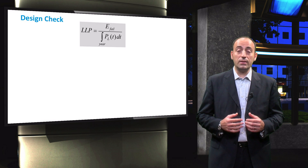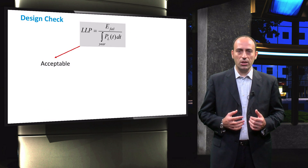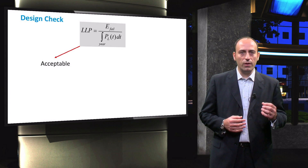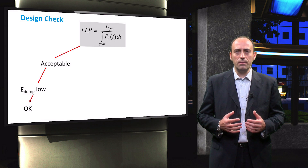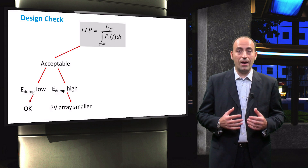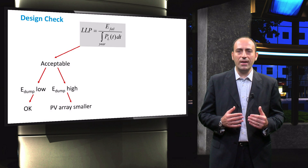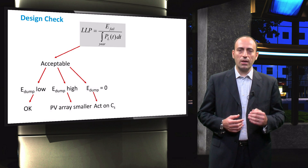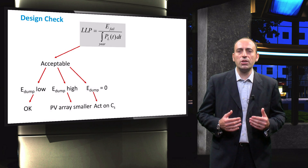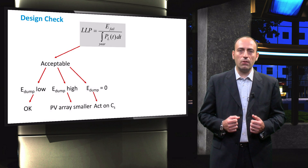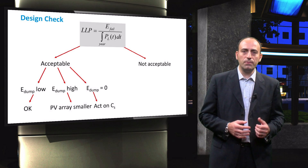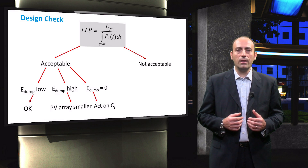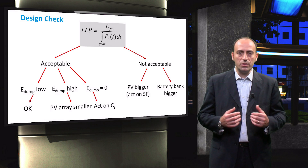If the loss of load probability is acceptable, and this depends on the application of your PV system, the calculated dumped energy by the PV system is assessed. If the E-dump value is low, the system is approved. If the E-dump is high, the PV array sizing is adjusted by downsizing it. And if the E-dump is zero, the number of chosen autonomous days can be reduced. This will potentially reduce the size of the battery bank and eventually bring down the costs involved. On the other hand, if the loss of load probability is not acceptable, either the PV or the battery bank size is adjusted by acting on their corresponding sizing factors.